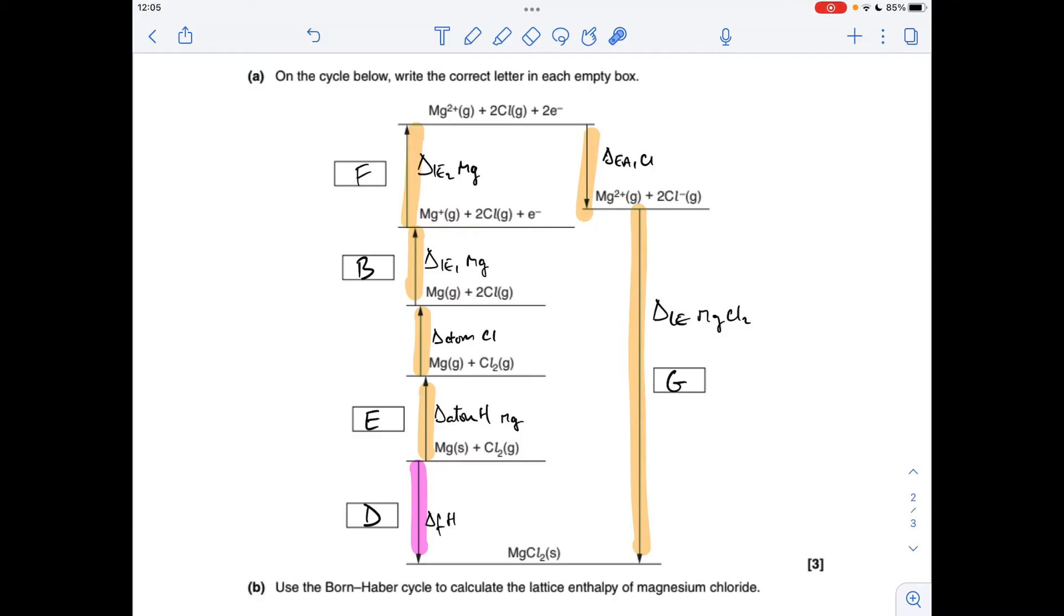So before I go on to the calculation, just explain this again. So we've got two routes going from element to solid lattice. We've got the simple route, the enthalpy change of formation, which I've coloured in pink there.